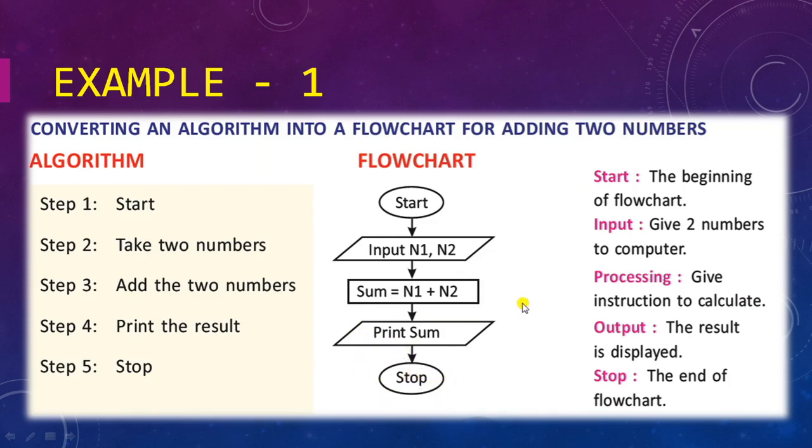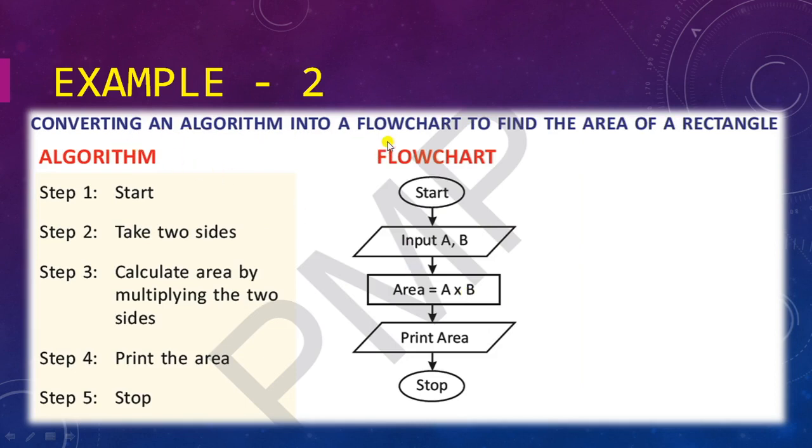Another example is converting an algorithm into a flowchart for finding the area of a rectangle. We start, then take two sides. For finding the area of a rectangle we need length and breadth, so we input A and B. The variable name can be anything. Here area equals length times breadth.